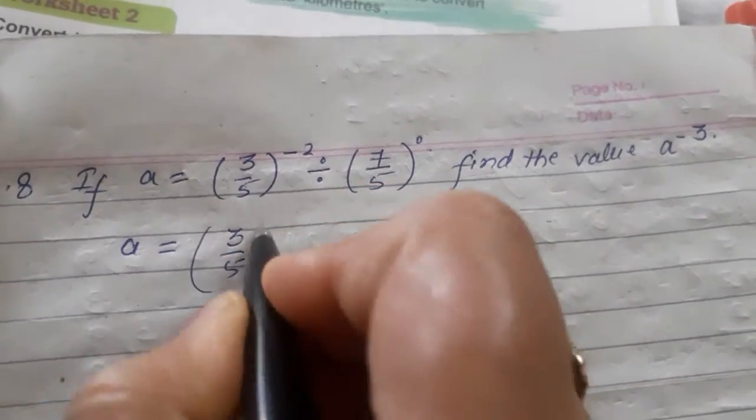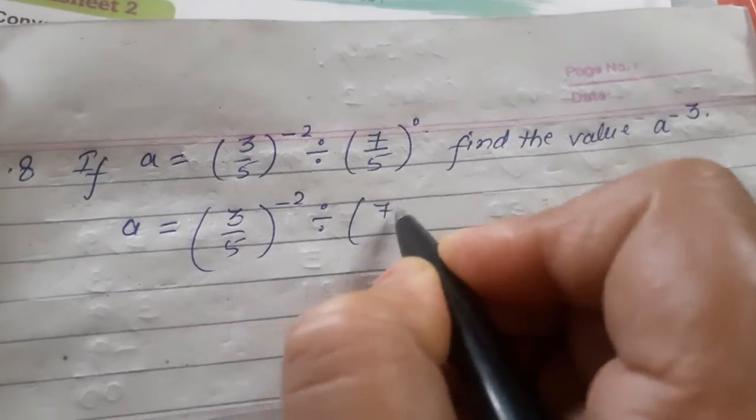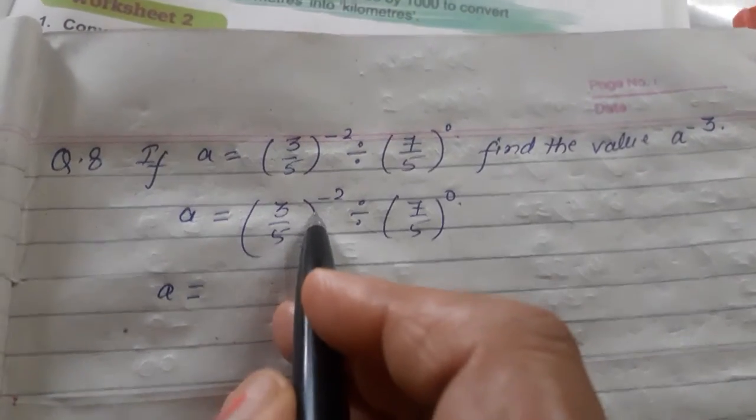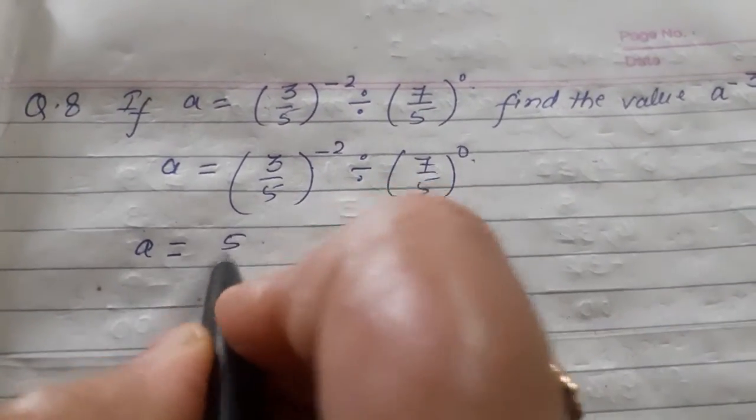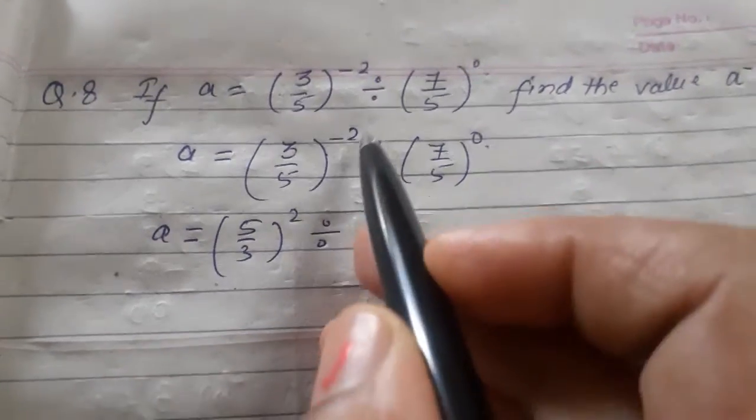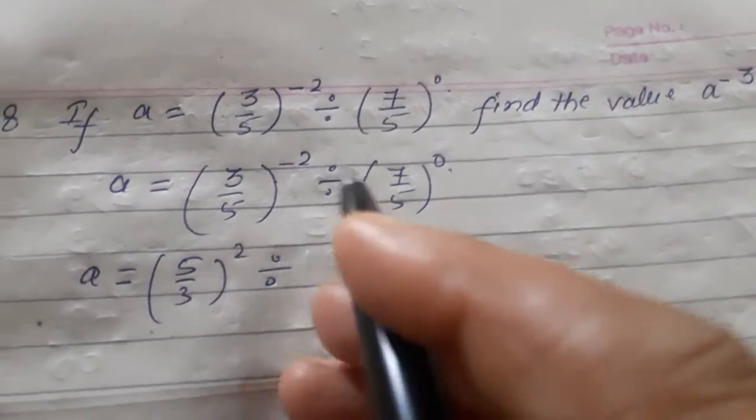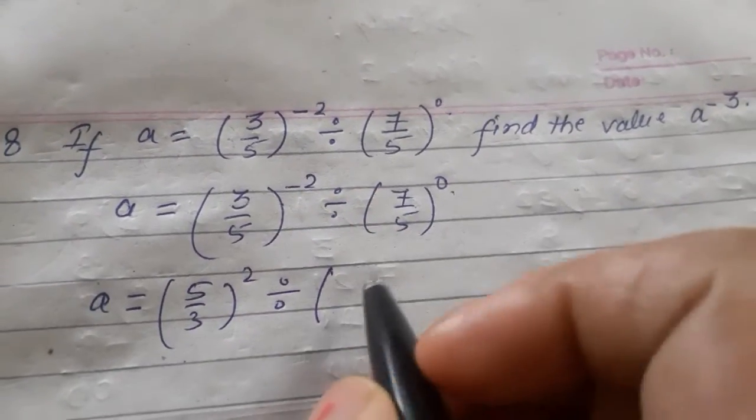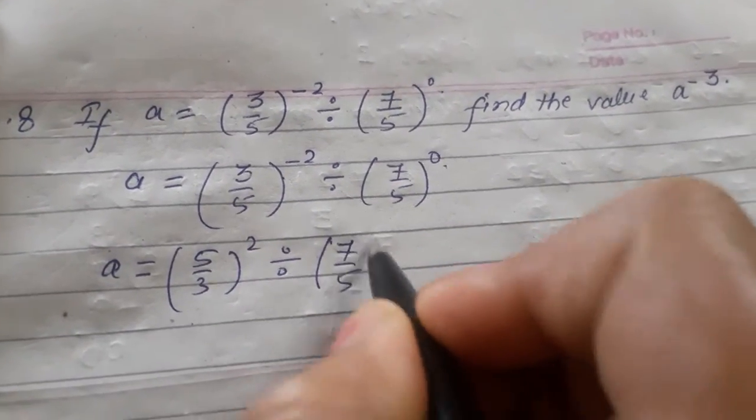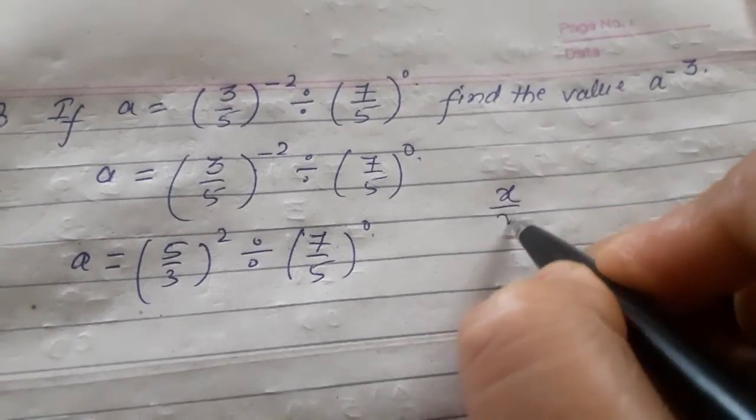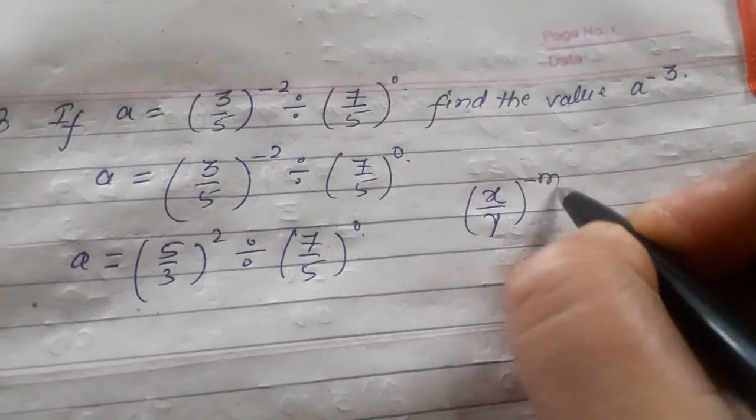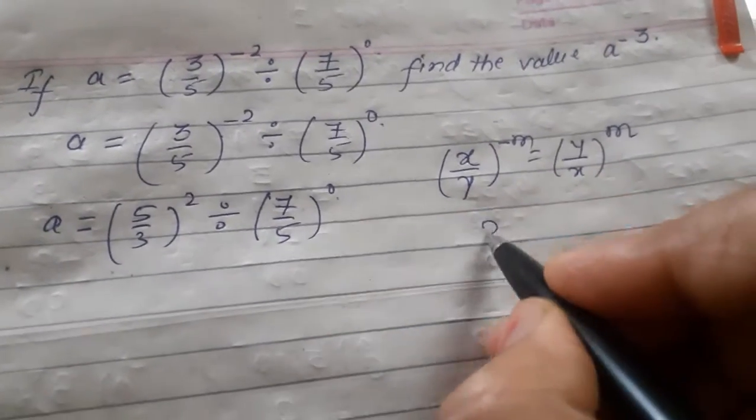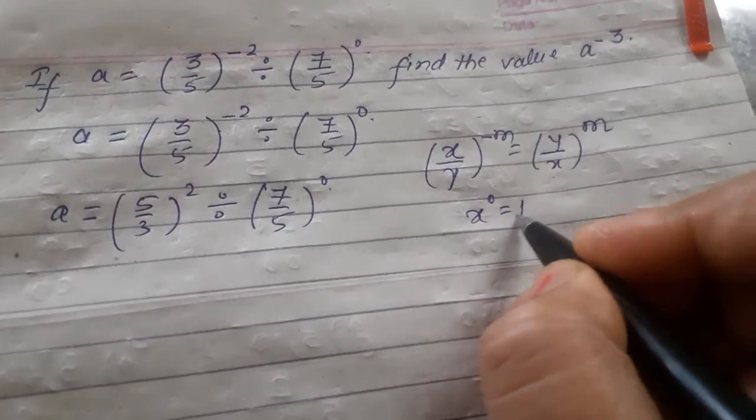Let me write the complete expression for a. Then I will find out the reciprocal of 3/5, it is 5/3. Why have I taken the reciprocal? You know very well, because it is the negative power. That is why to convert it into positive power we have taken the reciprocal of the base. Now (7/5)^0, so here I should write (x/y)^-m is equal to (y/x)^m, and we know any base with power 0 is equal to 1.